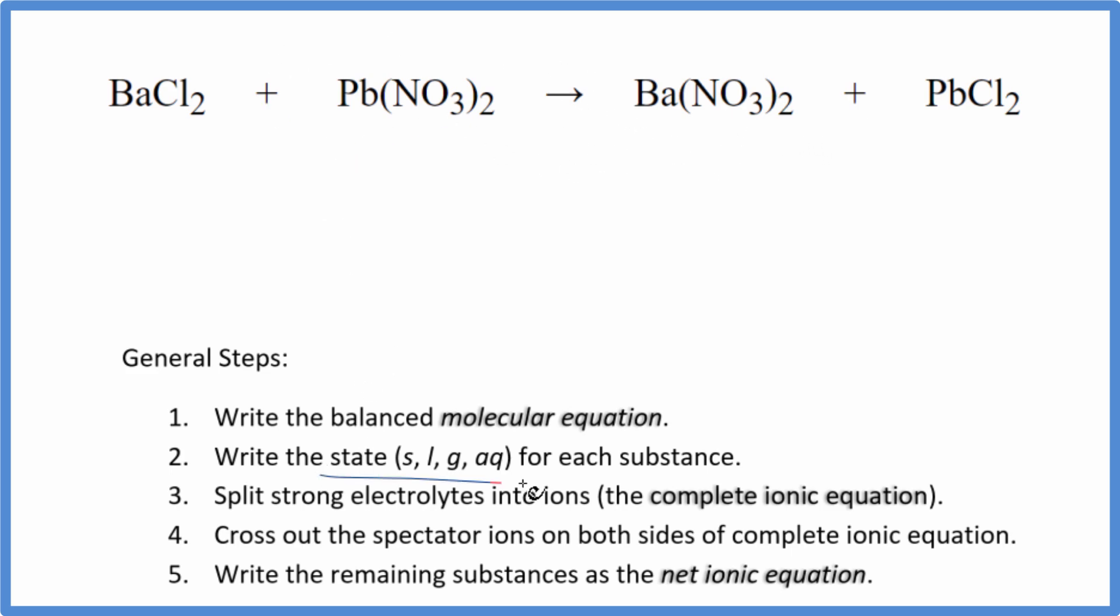Next we can write the state for each substance. Chlorides are very soluble. If you know your solubility rules, it's going to be aqueous. It's going to dissolve and dissociate into its ions. Compounds with nitrates, also very soluble. So put an aqueous here, and for the barium nitrate, that's going to be aqueous.